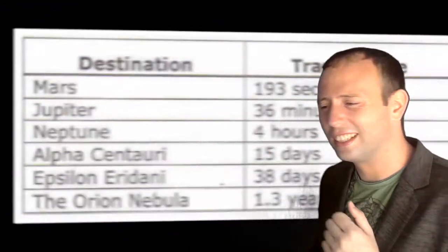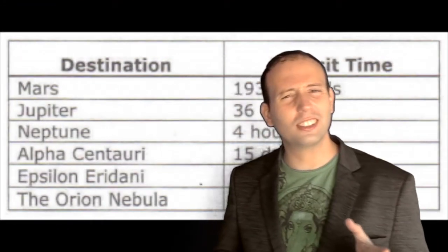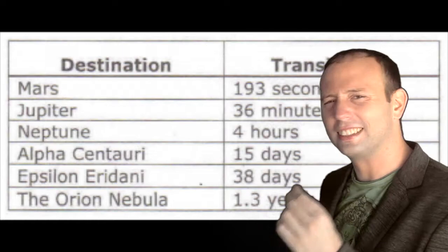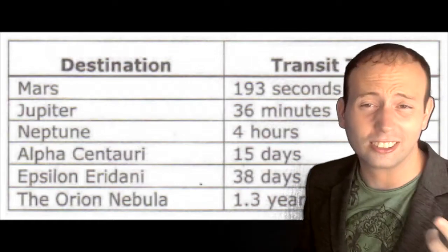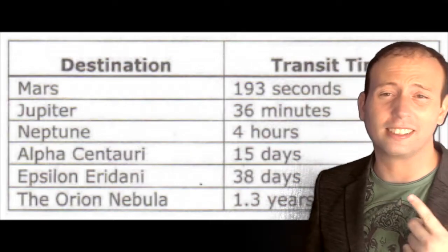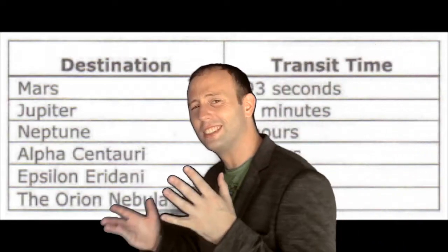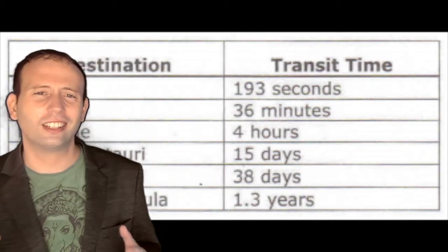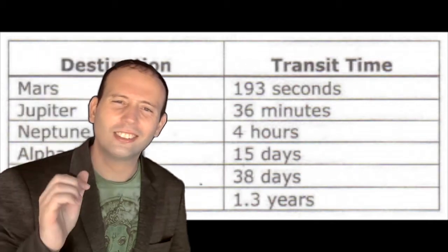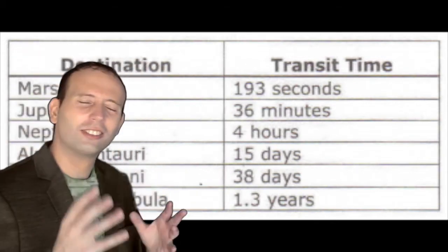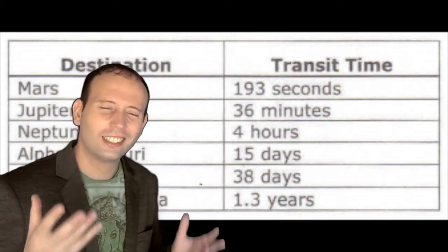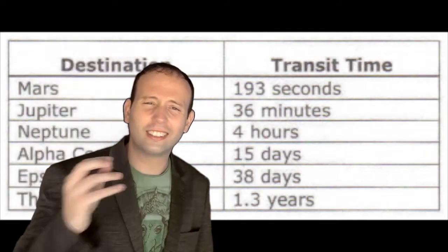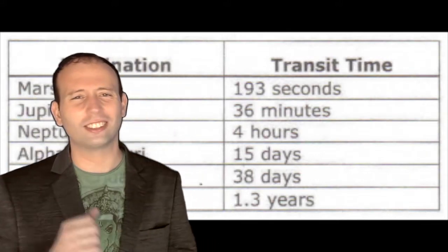As this table shows, trips to the planets within our solar system would take hours rather than years, and journeys to local star systems would be measured in weeks rather than hundreds of thousands of years.